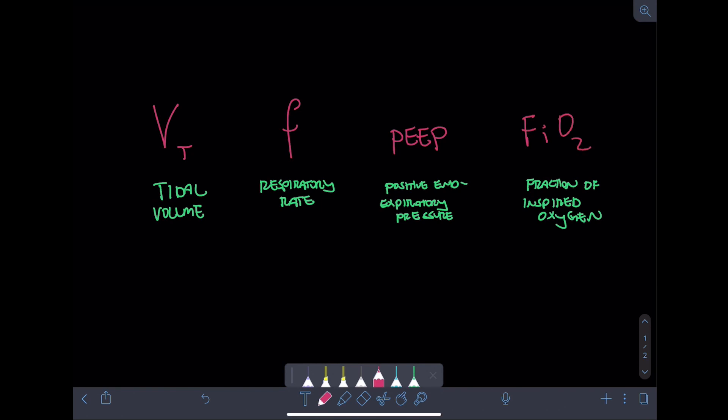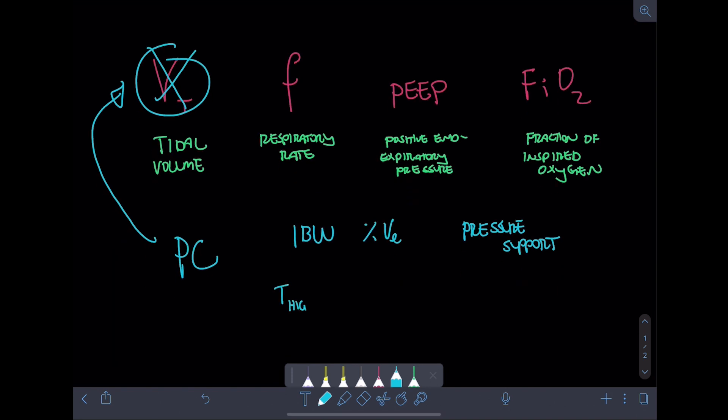Now there are many different types of modes, some of which come with settings different than what you see here. For example, pressure control substitutes a pressure for a volume, or smart modes might have ideal body weight or a percent minute ventilation. Spontaneous breaths may have pressure support, or bi-level may have a time high and a time low. These will be covered in another video, but for the most part, there's a high chance that your intubated, sedated patient will be on some form of volume control, which have these four settings here.